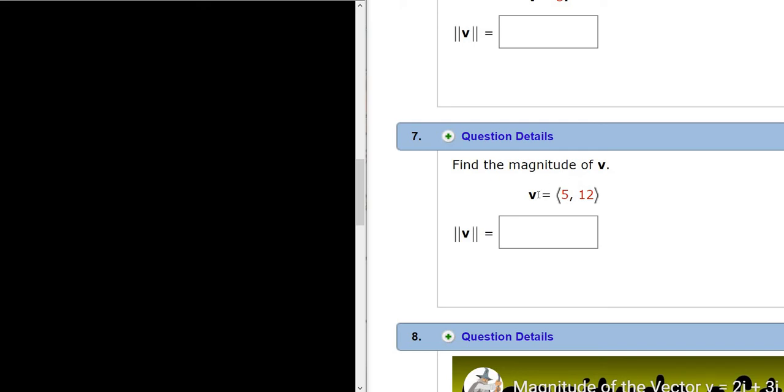In this problem, we're going to find the magnitude of the vector v, where v is equal to the vector given in component form 5, 12. So I'm going to write down our vector v in component form: angle bracket 5, 12, angle bracket.